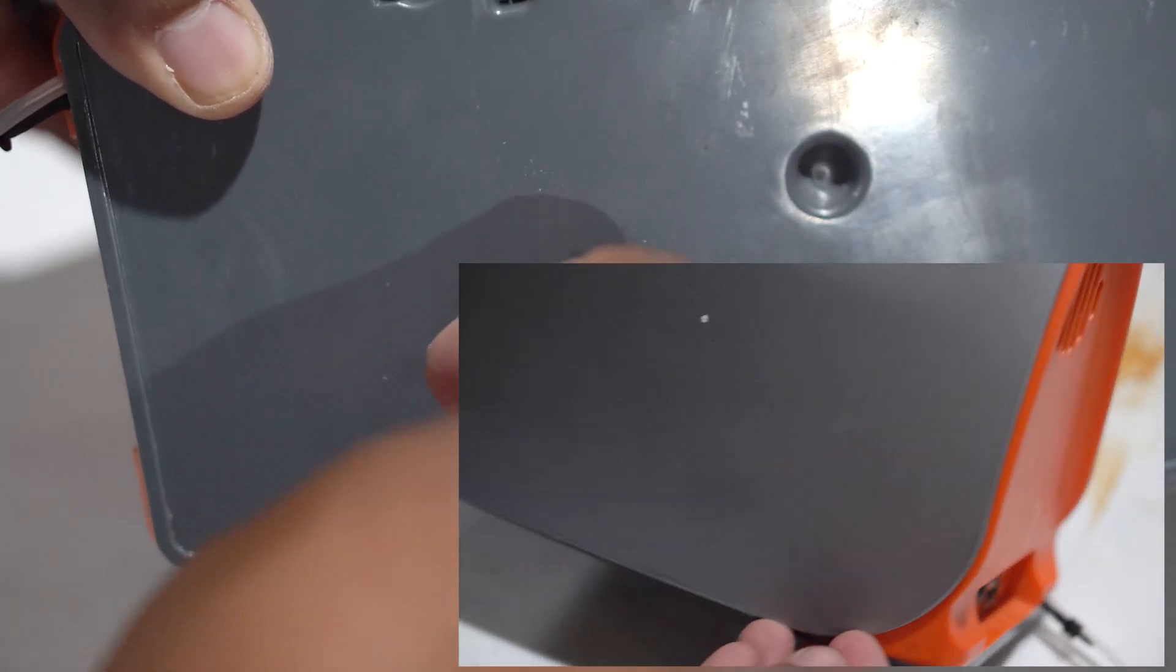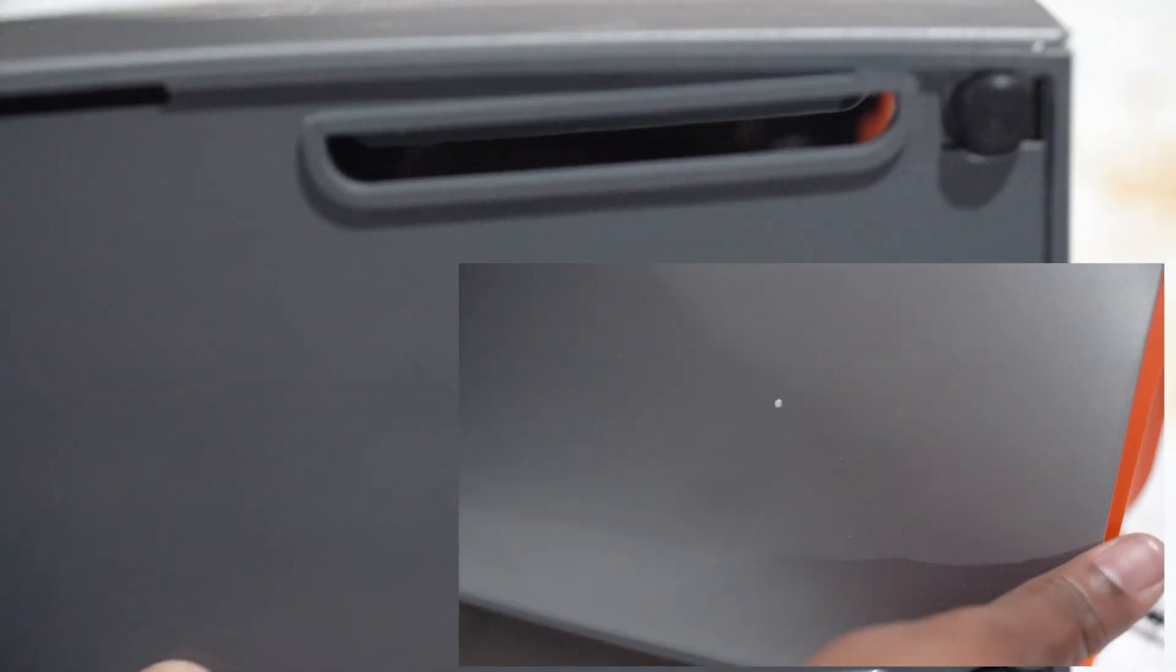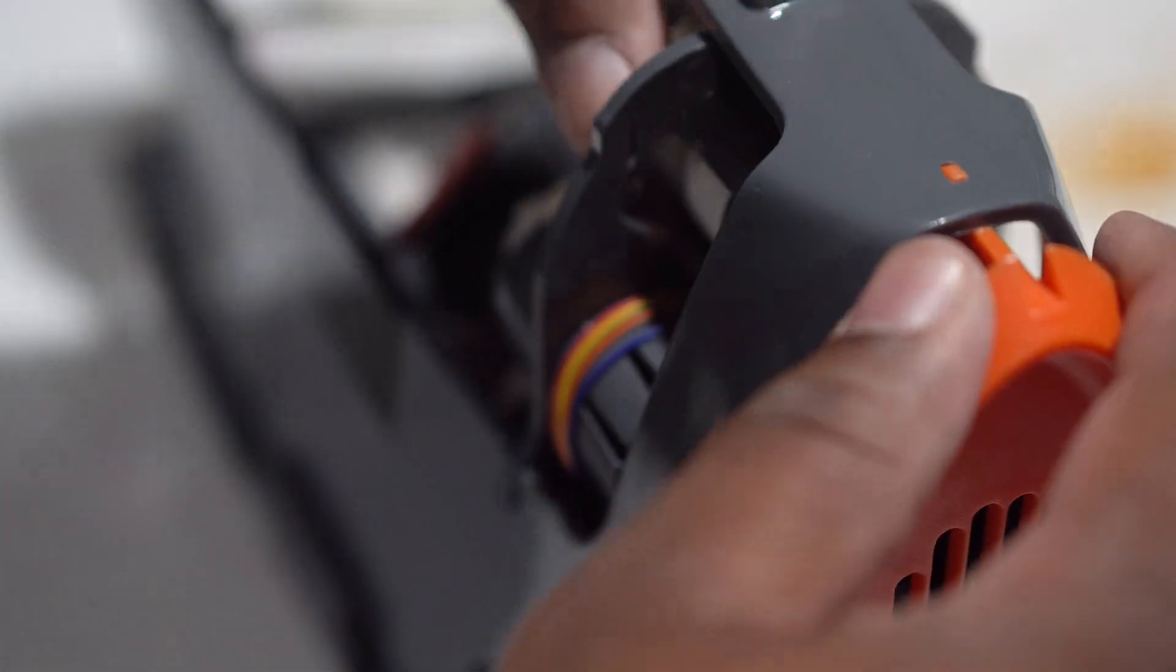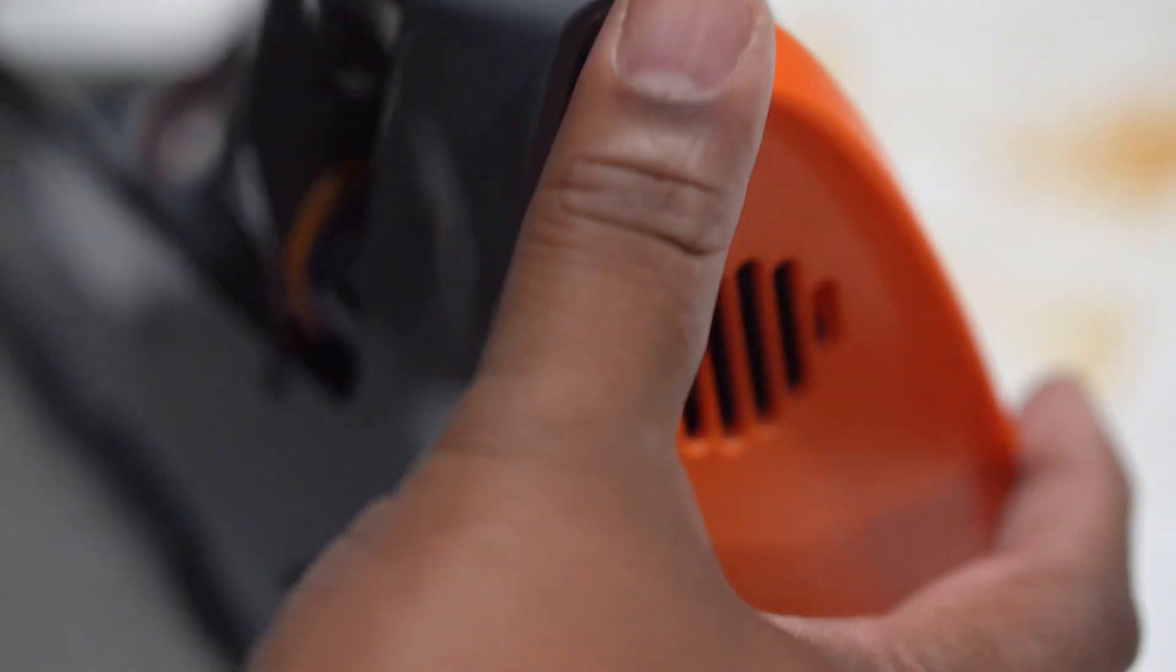The next step is to remove the orange backplate by pressing down on the top tab and leaning it backwards to remove it from the main Trident base. This will expose the wirings behind all of the dosing heads.